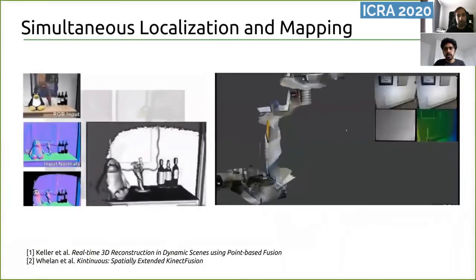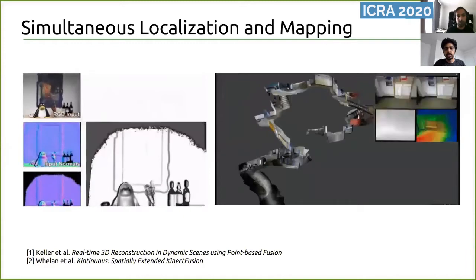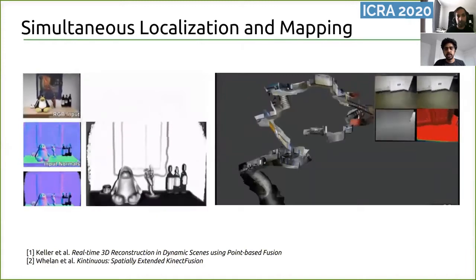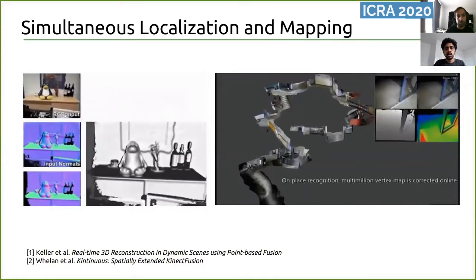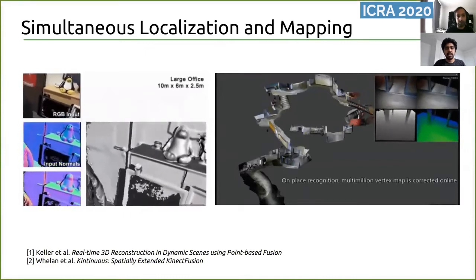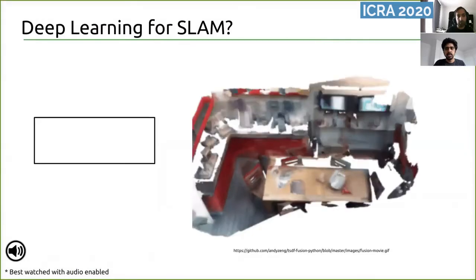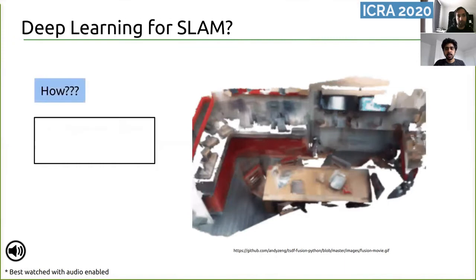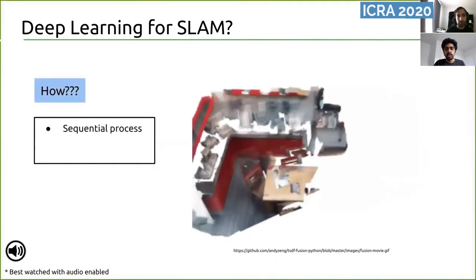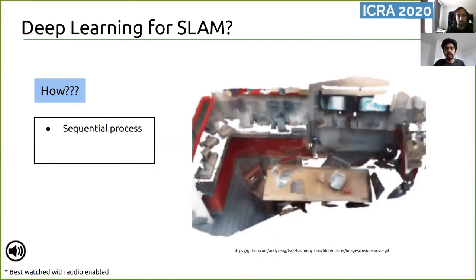SLAM, or Simultaneous Localization and Mapping, is a key enabler for robots to operate in previously unseen environments. In this paper, we focus on dense maps constructed from RGBD cameras. SLAM poses several interesting challenges for modern deep learning systems, as it is a sequential process that violates the IID assumptions prevalent in most gradient-based learning methods.